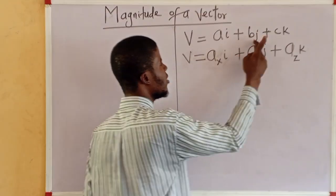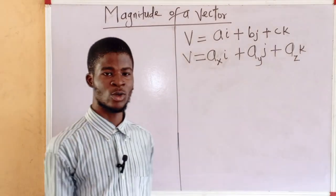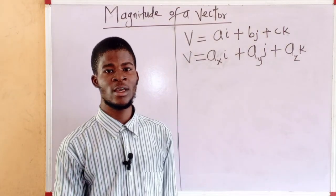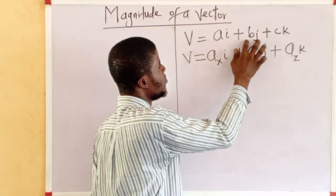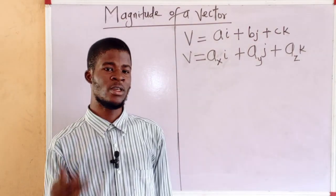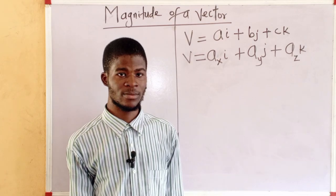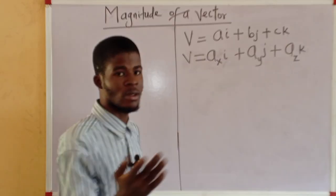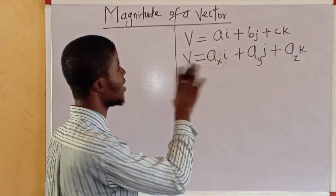i, j, and k are called unit vectors along the x, y, and z axes respectively. ai, bj, ck are the vector components along the x, y, and z axes respectively. Any of this notation is okay. We are saying the same thing. This is for a vector in three dimension.